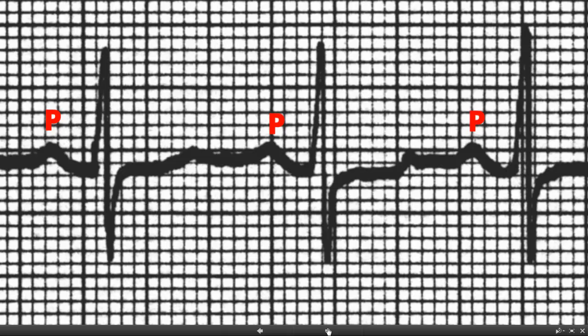Now we're going to do something new called the PR interval. It's where does the P-wave start — about right here — that's the SA node firing. The P-wave would be the atria responding to that. The signal then goes into the AV node where it is delayed prior to entering the ventricles, so the QRS is when the AV node releases the impulse. The interval from the beginning of the P-wave to when it leaves the AV node should be no greater than 0.20 seconds or five small boxes. If it's longer than that, we would call that a first degree heart block. This one is not.